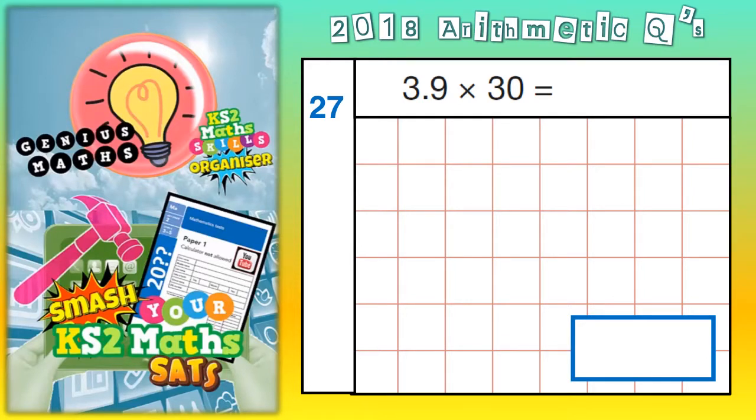Welcome, Arithmetic Ninjas, to question number 27. 3.9 times 30. Now, I'm going to show you two different ways of doing this, both of which get the same answer.